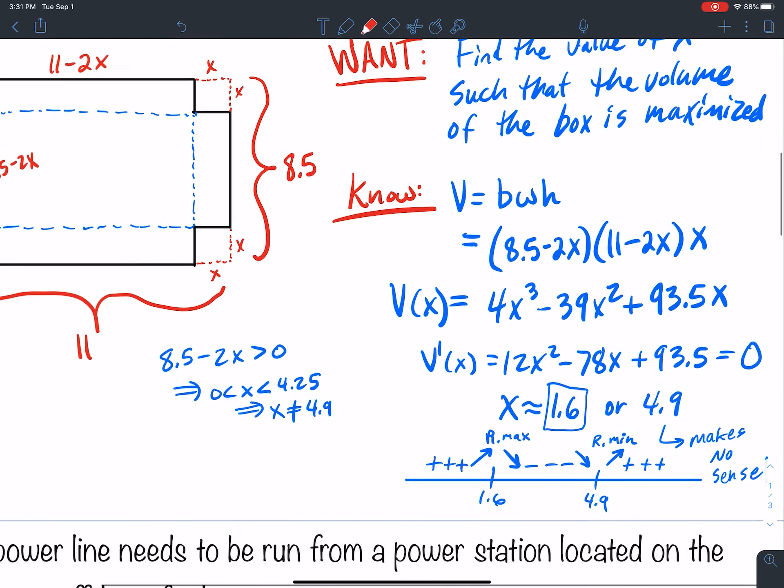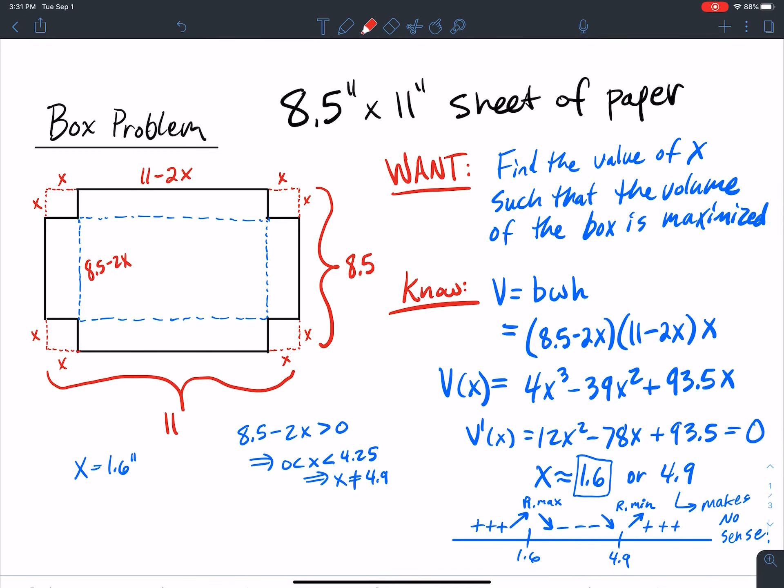Now what about 1.6? I already know it's a relative max by the first derivative test. If I plug in 1.6 here, so I have 11 - 2(1.6), and I have 1.6, and then I have 8.5 - 2(1.6). If I do all that math there, I'm going to get three dimensions that whenever I multiply it out, that's going to get me 66.144.